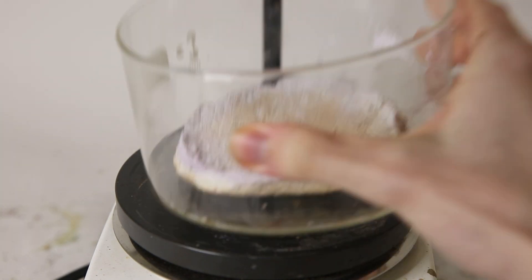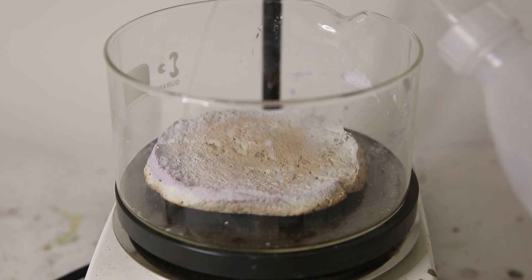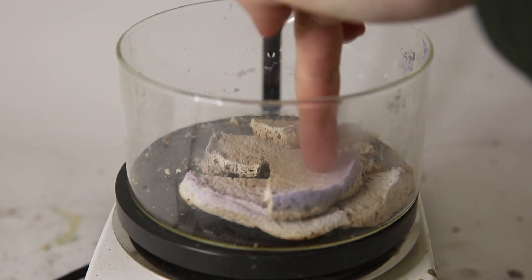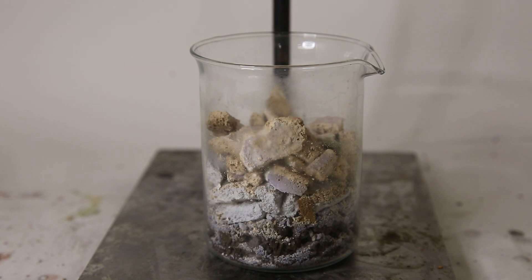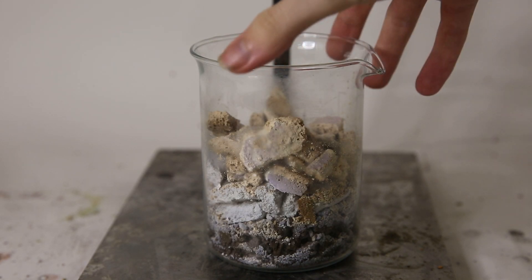To get my silver chloride cake out, I just wet it slightly and it breaks apart nicely. So this is all the silver chloride I have from all runs. Some are a lot more discolored than the others because it has been standing for longer.